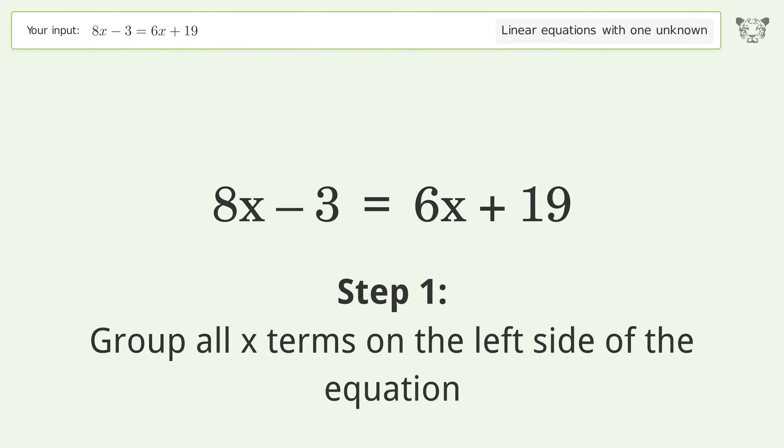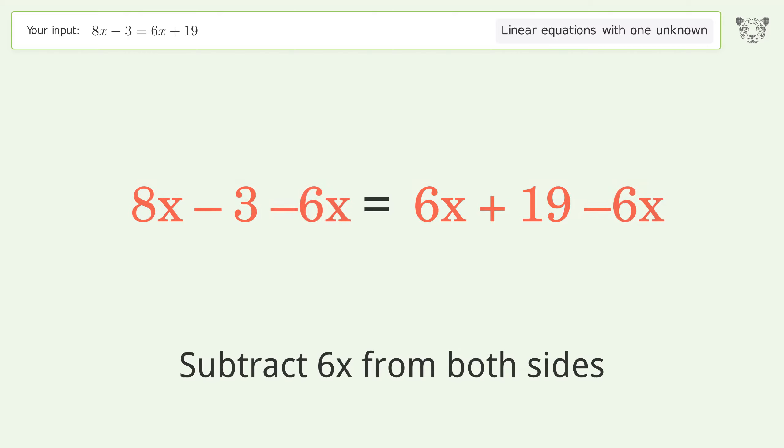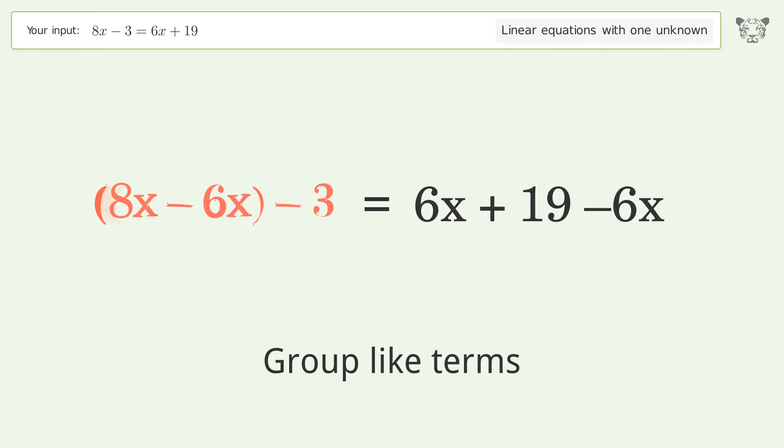Group all x terms on the left side of the equation. Subtract 6x from both sides. Group like terms. Simplify the arithmetic.